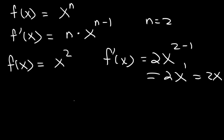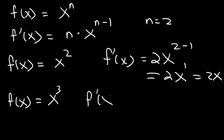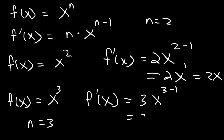Now let's try another example. If f of x is equal to x cubed, what is f prime of x using the power rule? In this case n is 3, so it's going to be 3x to the 3 minus 1. Since 3 minus 1 is 2, the answer is 3x squared.